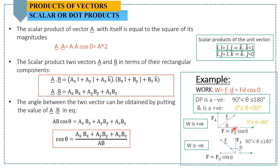Positive work means the force and displacement are in the same direction. For example, if you apply a force on a body and the body moves horizontally in the forward direction, the force and displacement both act forward, giving positive work. Negative work occurs when force and displacement are opposite to each other — for example, work done by gravity on a rocket moving upward.